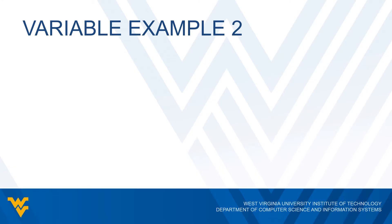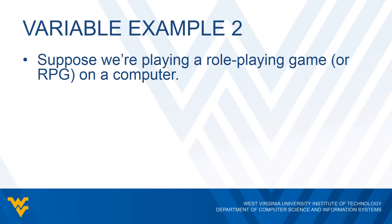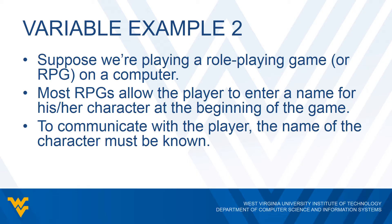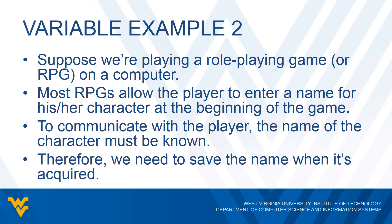Let's look at another example. Let's say we're playing a role-playing game on our computer — an RPG — like a Final Fantasy type or some MMO RPG. Use your imagination. Most RPGs would allow the player to enter a name for the character that he or she is playing. Now, let's say we want to communicate with that particular player — you have to know the name of that player. If you just type in a name and don't do anything with it, it's going to be hard to communicate if that name is not available anywhere. So we have to make sure we save that name somewhere, so we would have a variable that would store the name.